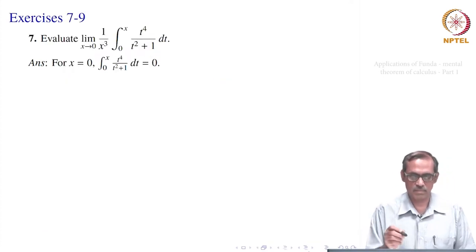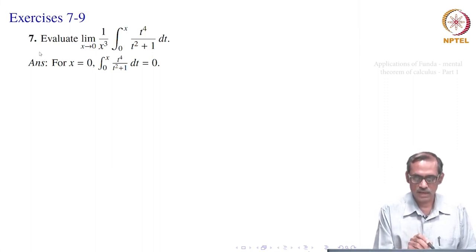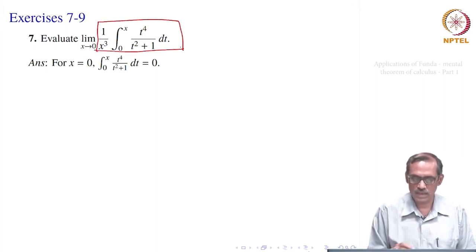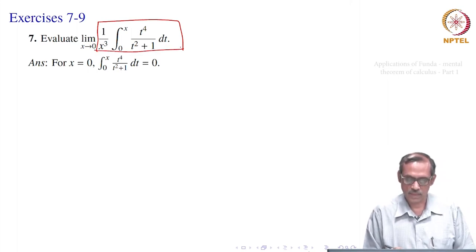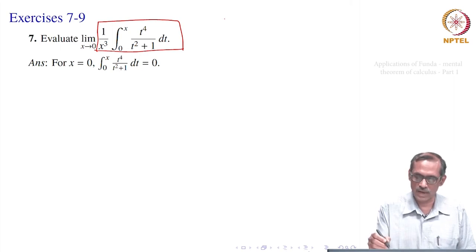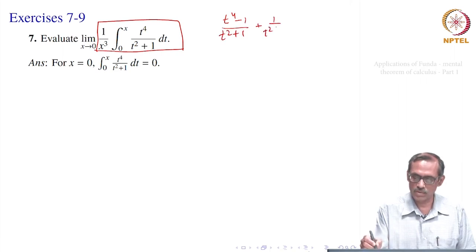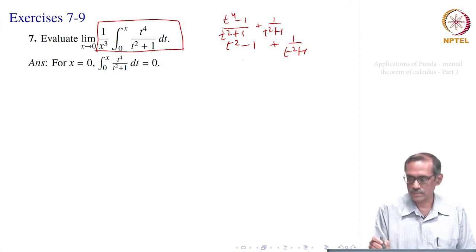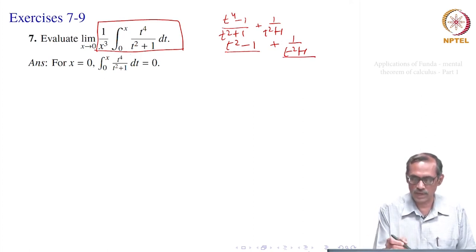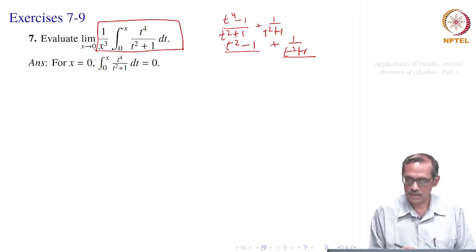Let us find out what happens in this problem. Here we want to evaluate a limit as x goes to 0. What is the function? It is 1 by x cubed times an integral. You can integrate this: it is t fourth divided by t squared plus 1. You can take t fourth minus 1 by t squared plus 1, plus 1 by t squared plus 1. The first one gives t squared minus 1 and the second one is kept as is. This you can integrate just like a polynomial; the second part will be tan inverse t. So, you can really integrate, substitute x, and then go for the limit. But that will be a bit lengthy.